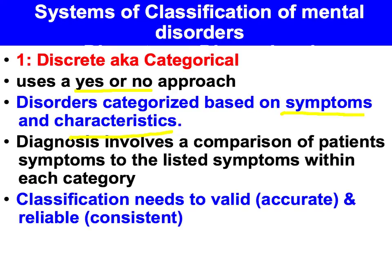The classification needs to be valid — the symptoms need to match the disorder identified in the manual — and it needs to be reliable, so that when we come up with a list of symptoms, we will consistently arrive at the same diagnosis.